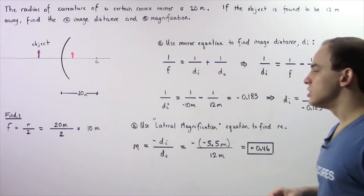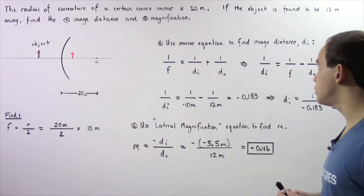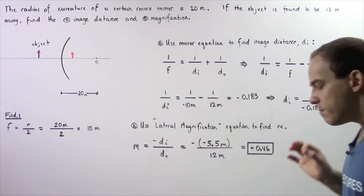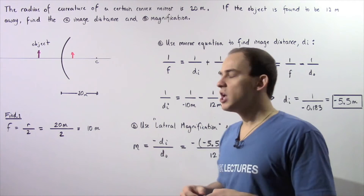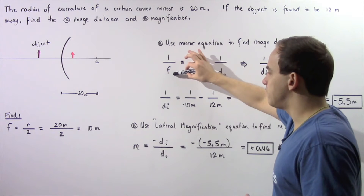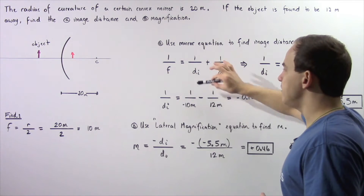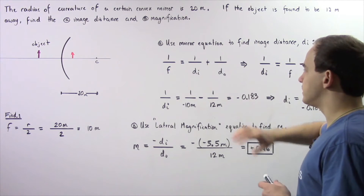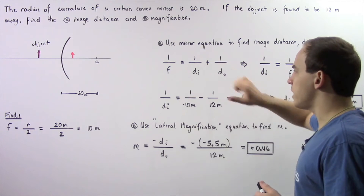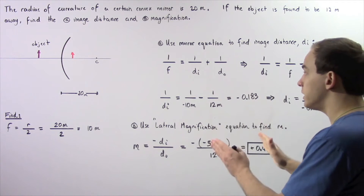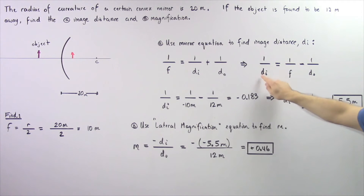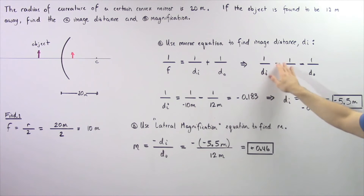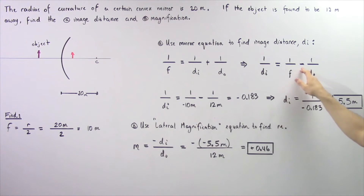Moving on to part A, we want to apply the mirror equation to find the image distance DI. The same mirror equation used for concave mirrors also applies to convex mirrors: 1/F = 1/DI + 1/DO. Let's rearrange this and solve for DI, bringing the knowns to the right side and the unknown to the left: 1/DI = 1/F − 1/DO.